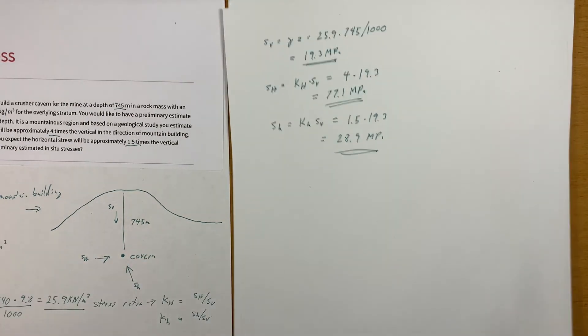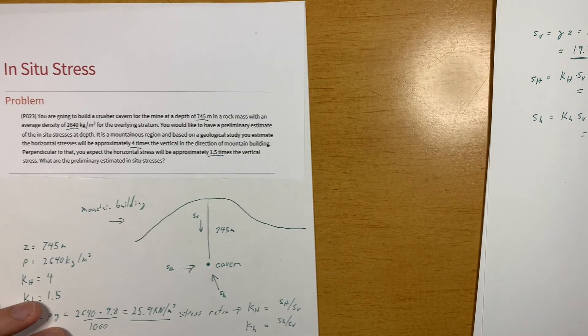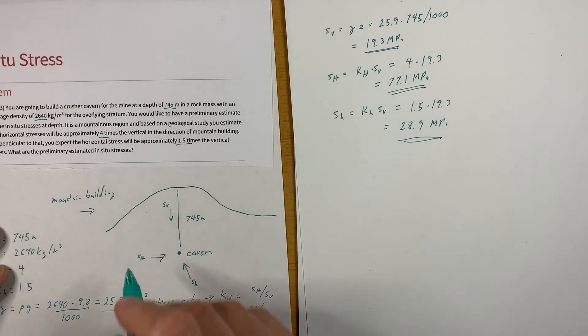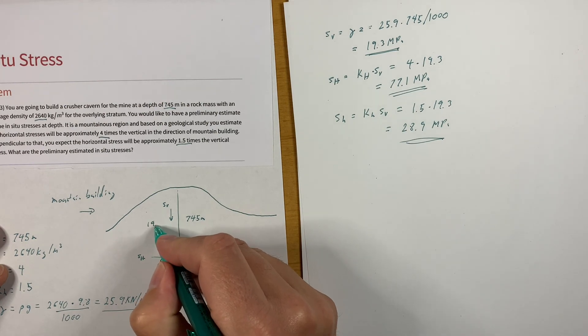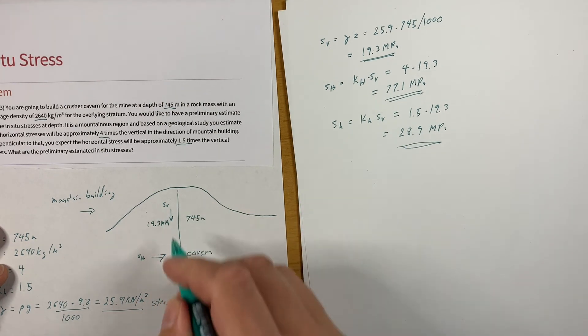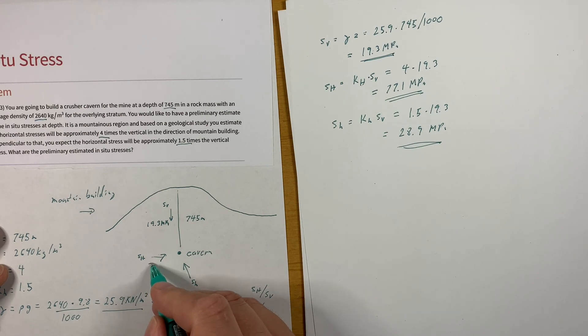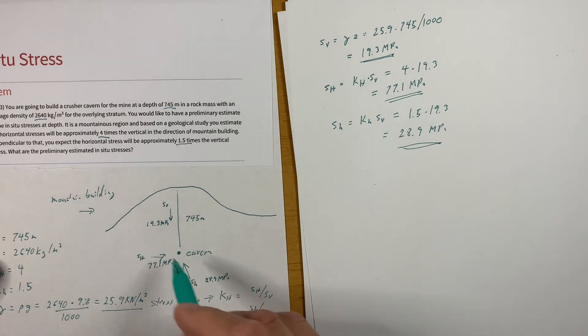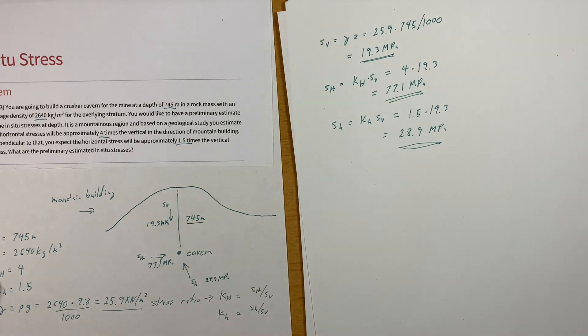And then it's always a good idea to go back to our figure and sort of draw them on there so we can understand exactly what kind of conditions we have. So the vertical stress is 19.3 MPa, the maximum horizontal 77.1 MPa, and the minimum is 28.9 MPa and this is acting into the page and all of these are acting at the cavern depth of 745 meters.